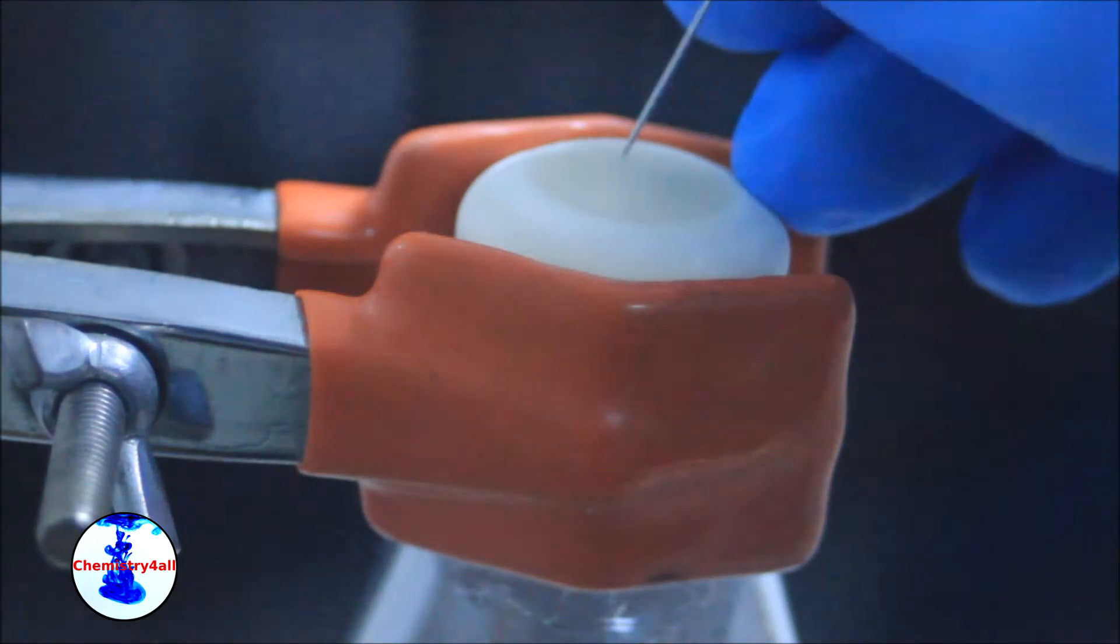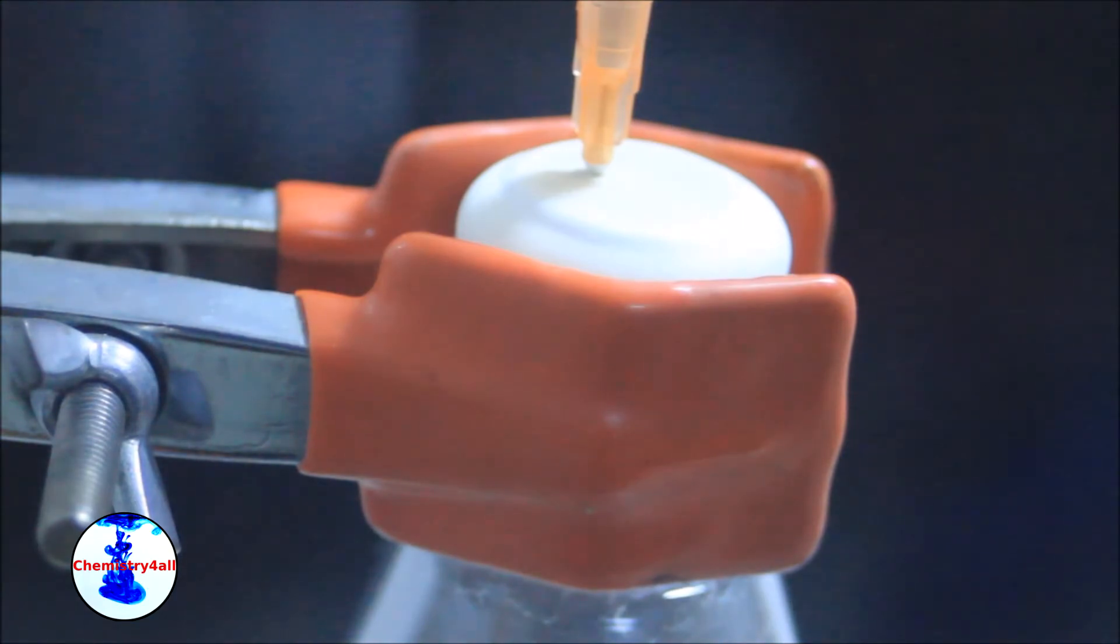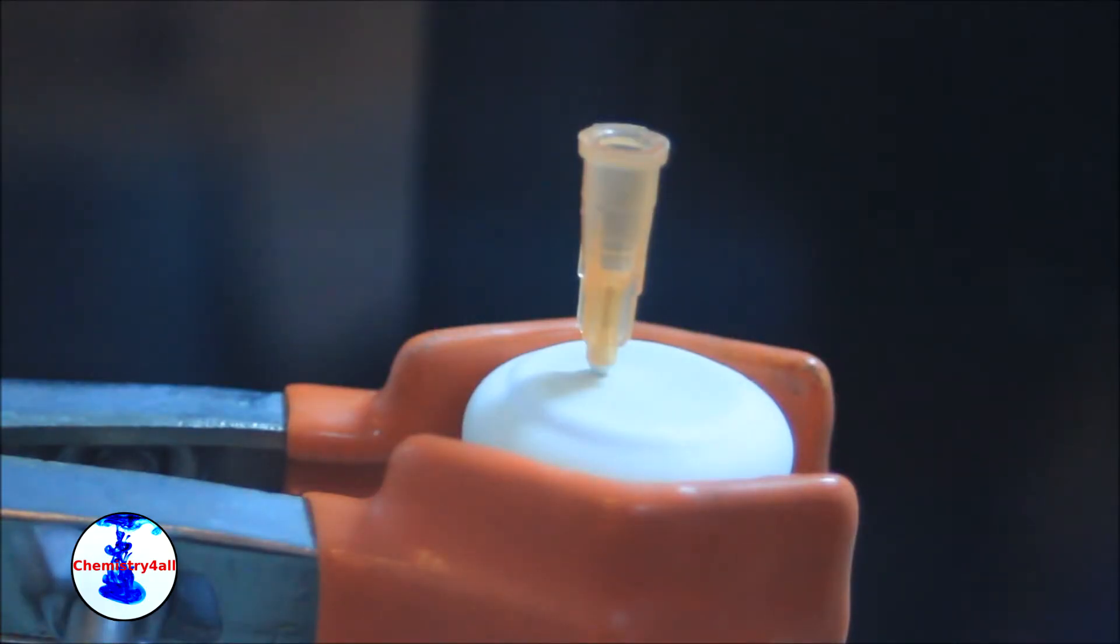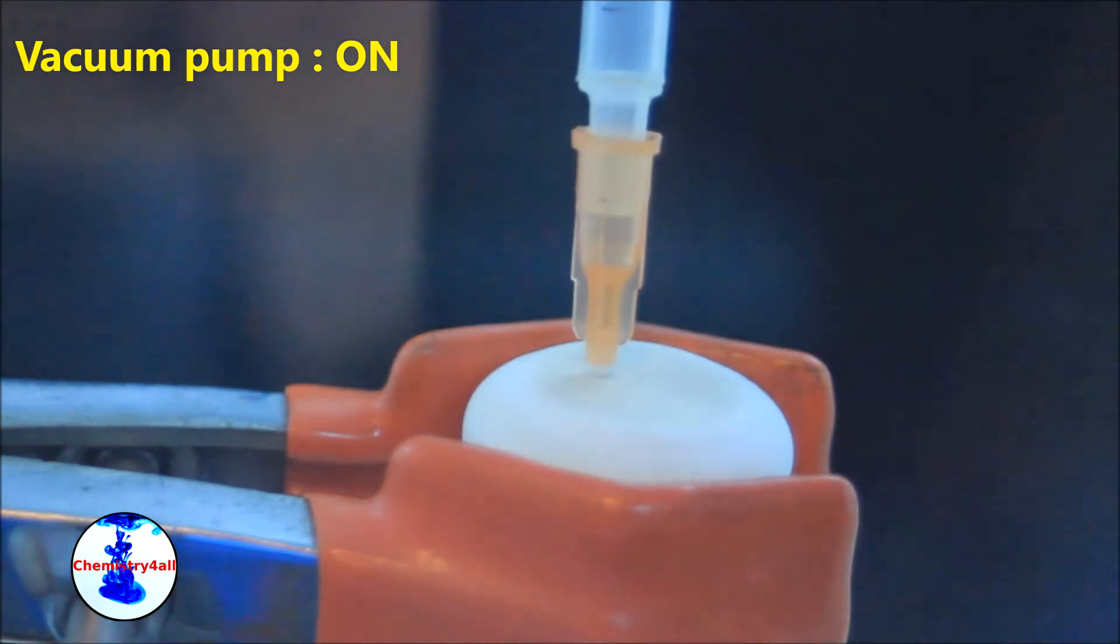Now we can seal the flask with a rubber septum, then connect a needle through the septum to the vacuum pump. This will remove most of the air present in the flask and most of the moisture within it.